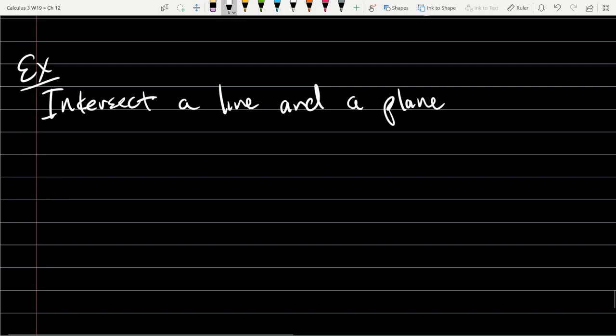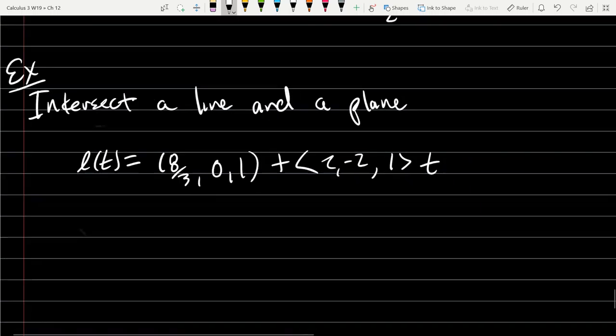Our line L(t) equals our point eight-thirds, zero, one, plus the slope two, negative two, one, times t. So that's our line.